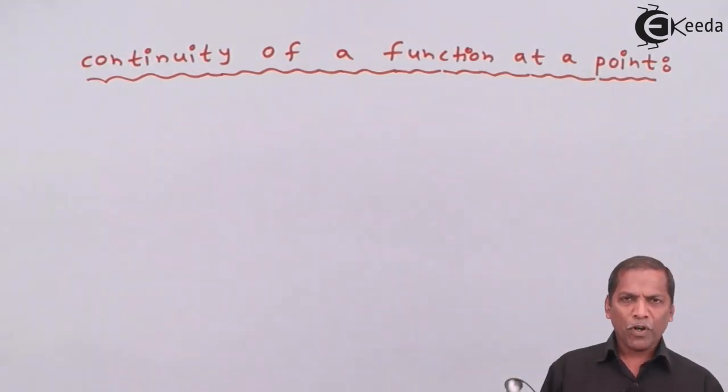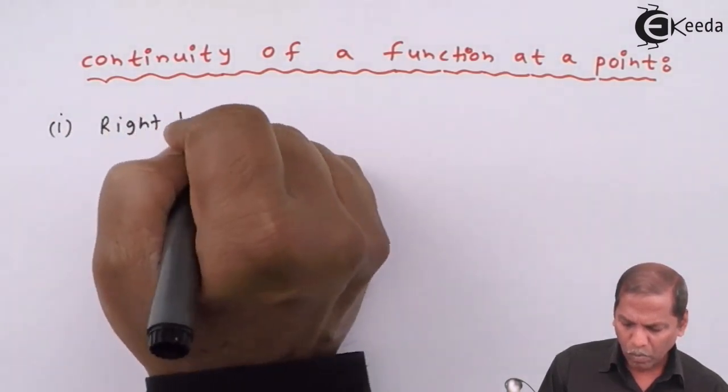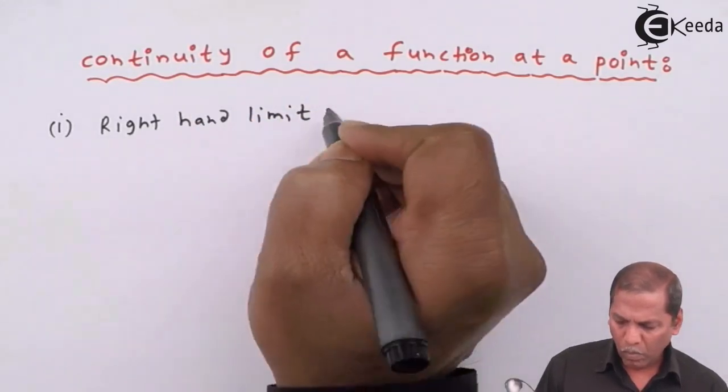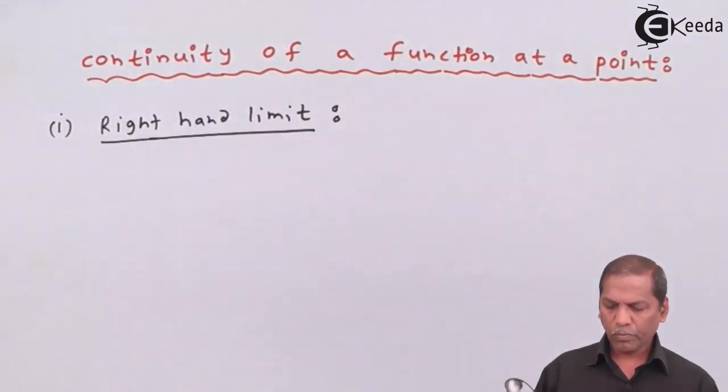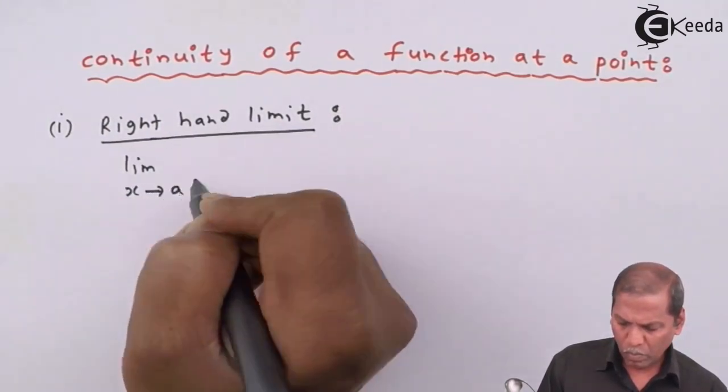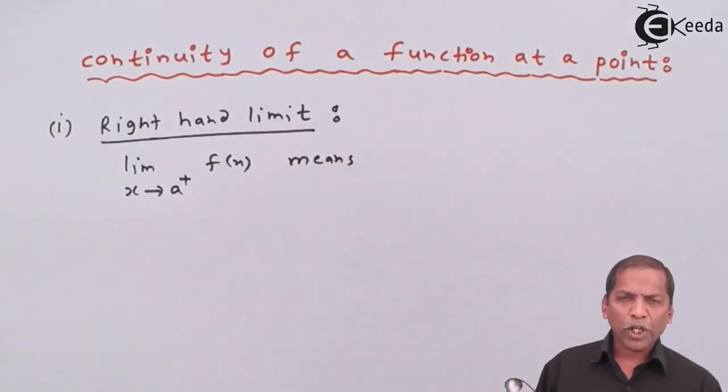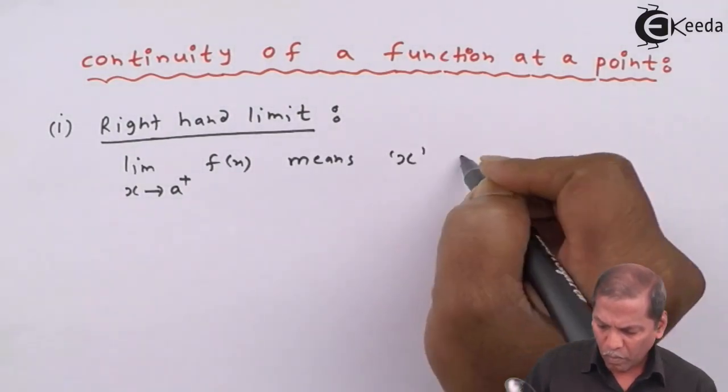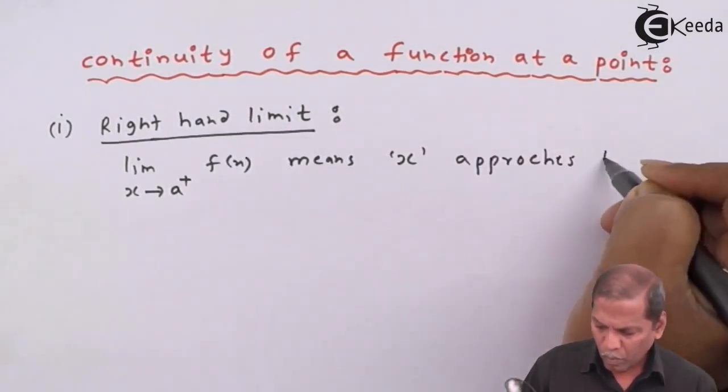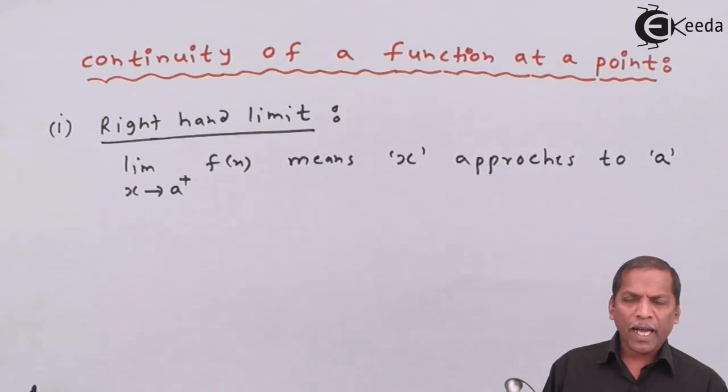First of all, we go through the right-hand limit. Limit x tends to a plus means x approaches to a through a value greater than a.